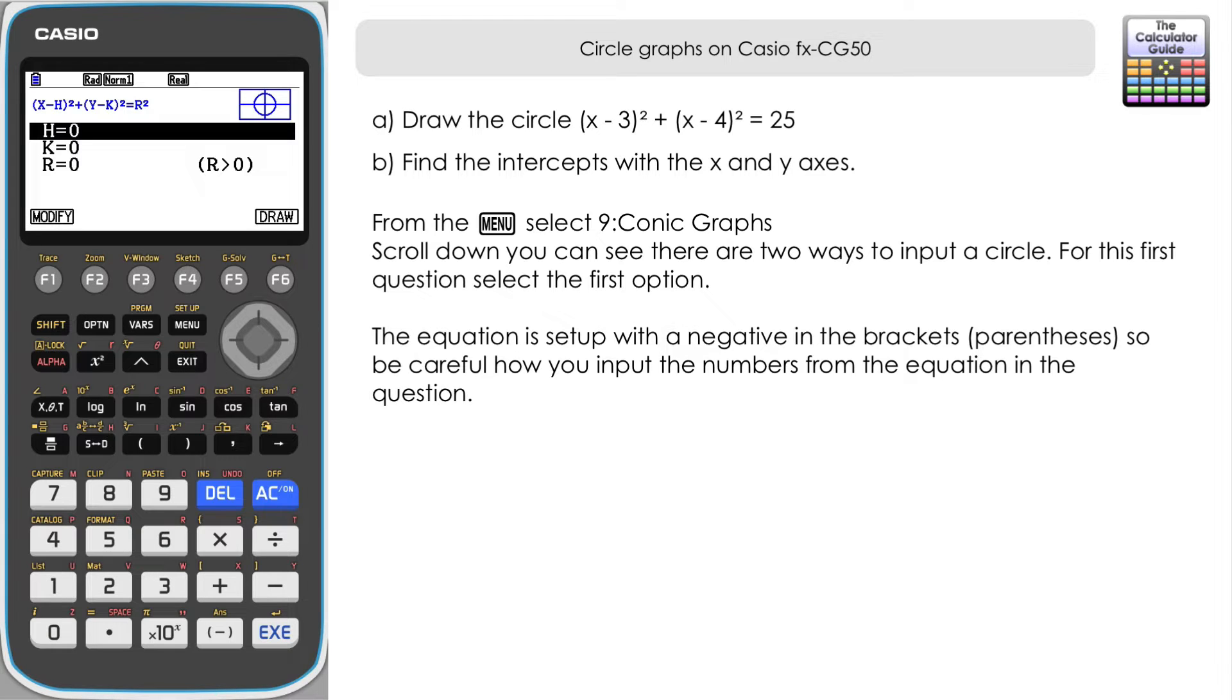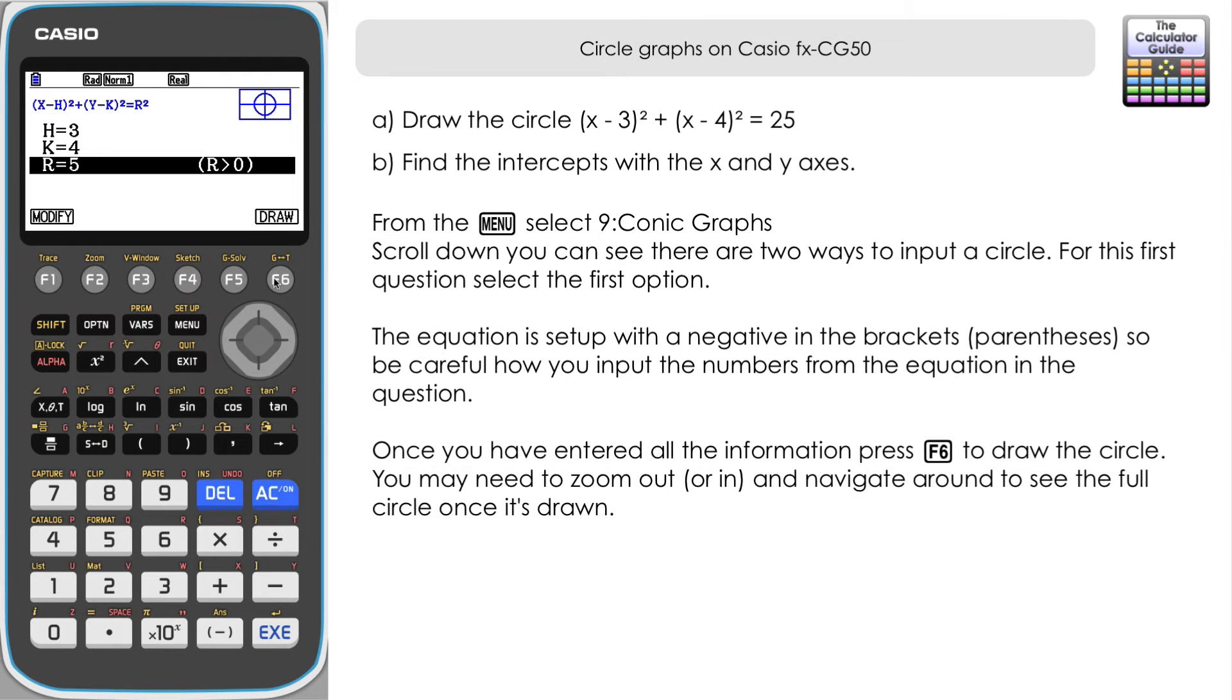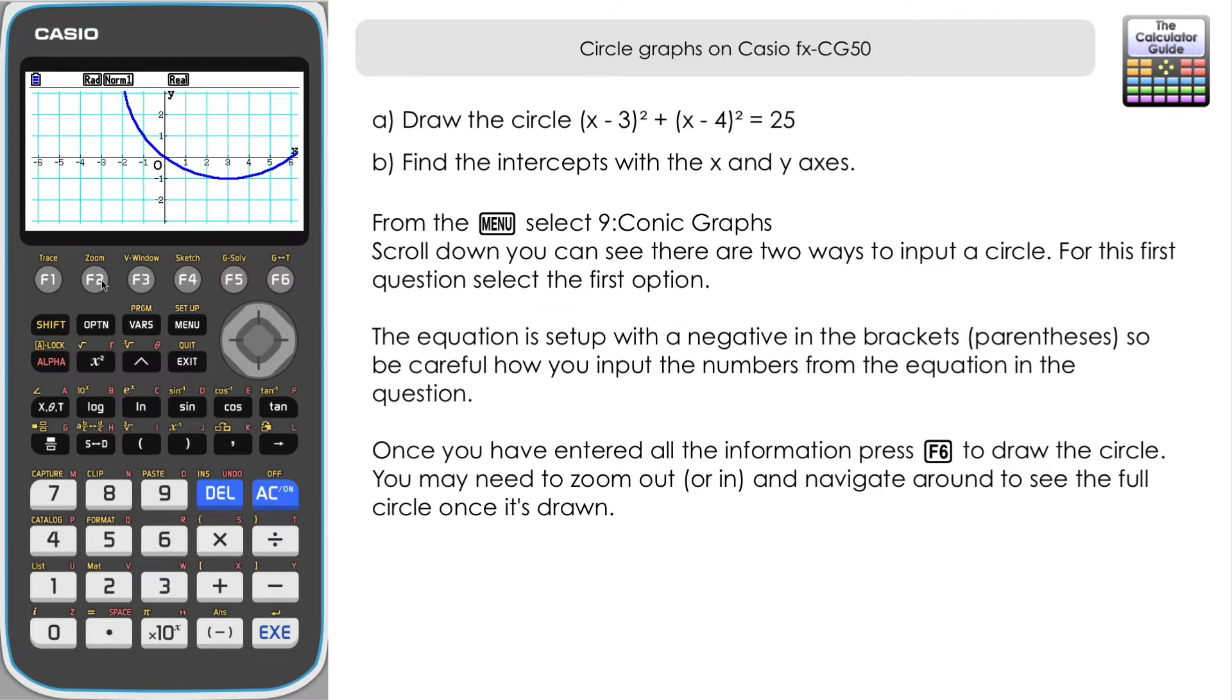So comparing it with what we have in the question we can see that h is going to be 3, k is going to be 4, and then we're interested in inputting r. r squared is 25 and so therefore r must be 5, the square root of 25. So we've inputted that and then you just need to select draw and it should draw a circle.